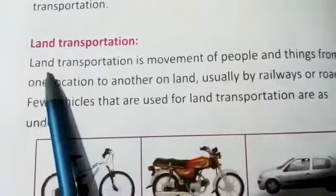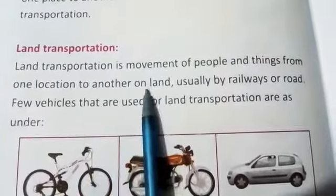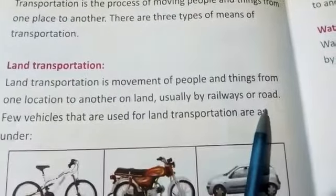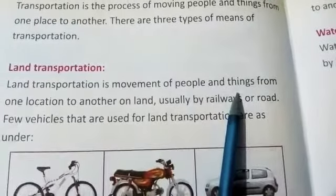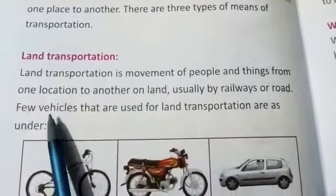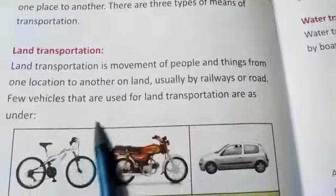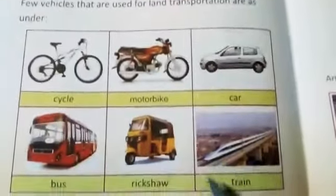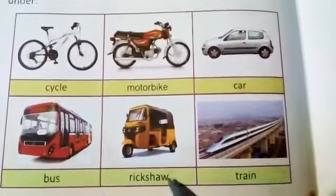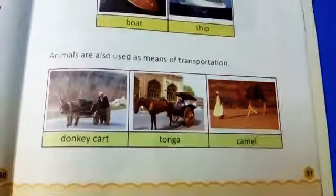Land transportation is the movement of people and things from one location to another on land, usually by railways or road. Vehicles that are used for land transportation include: cycle, motorbike, car, bus, rickshaw, and train. These are a few means of transportation on land.